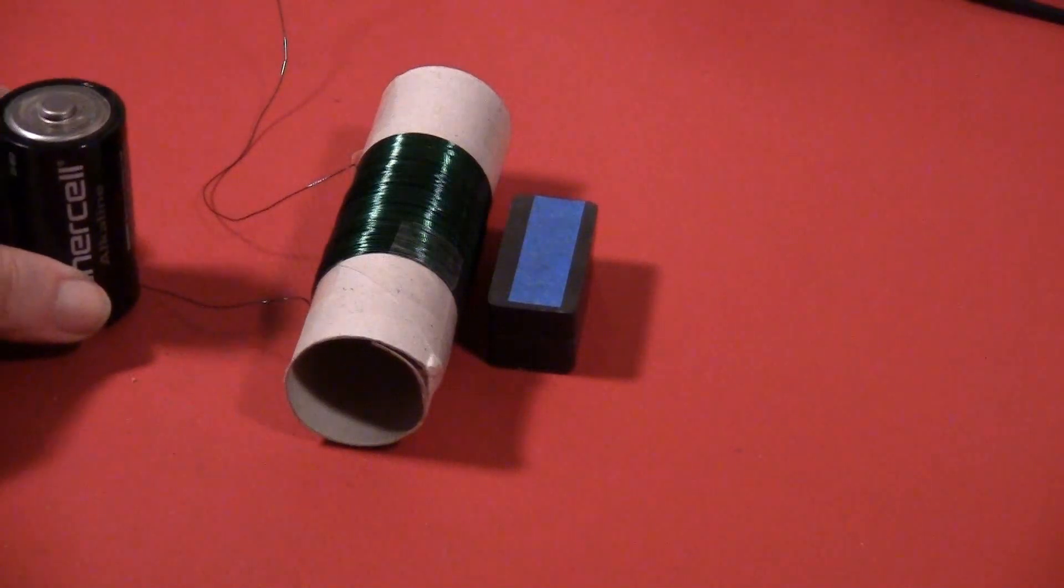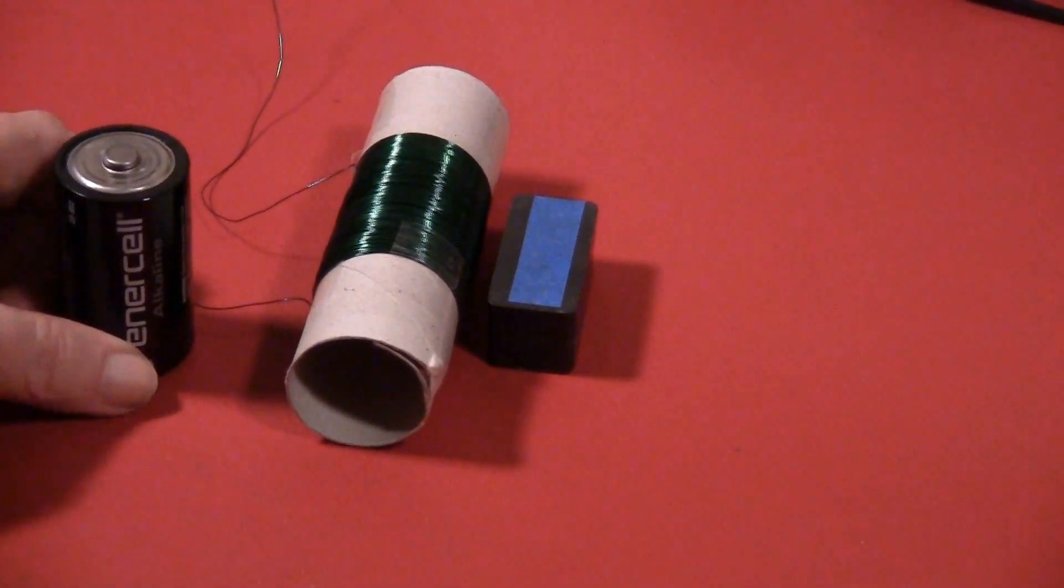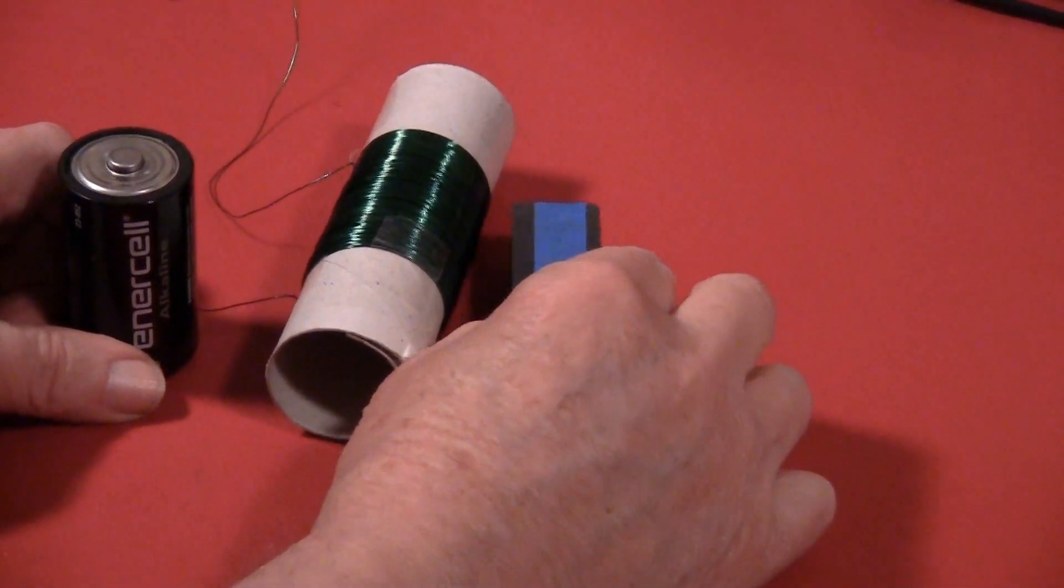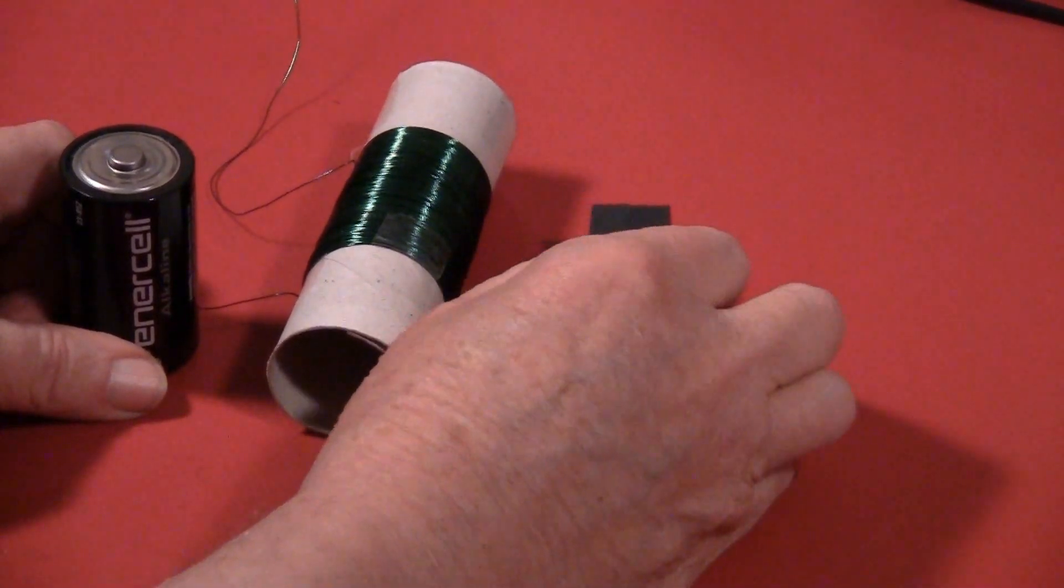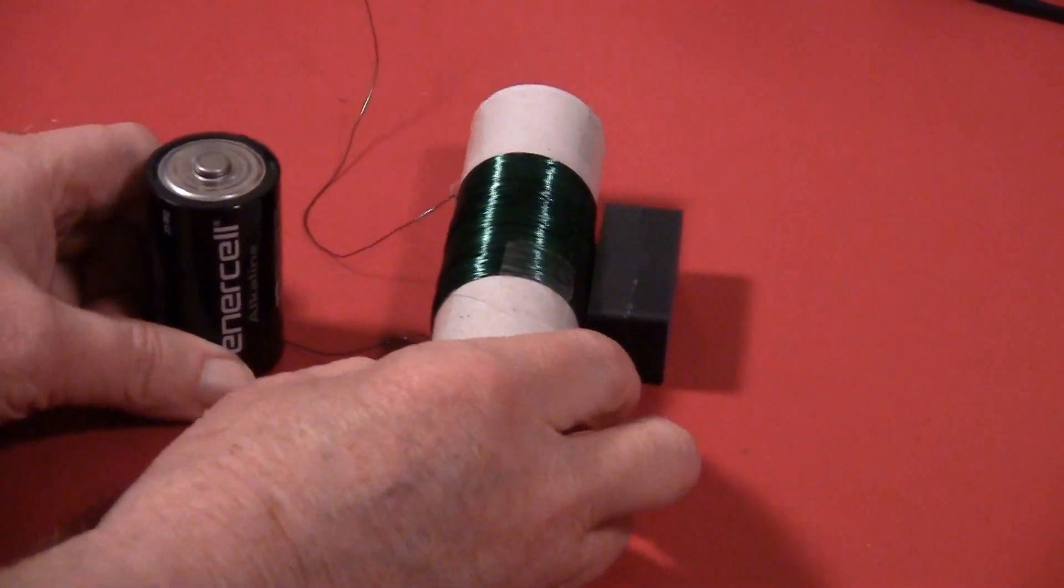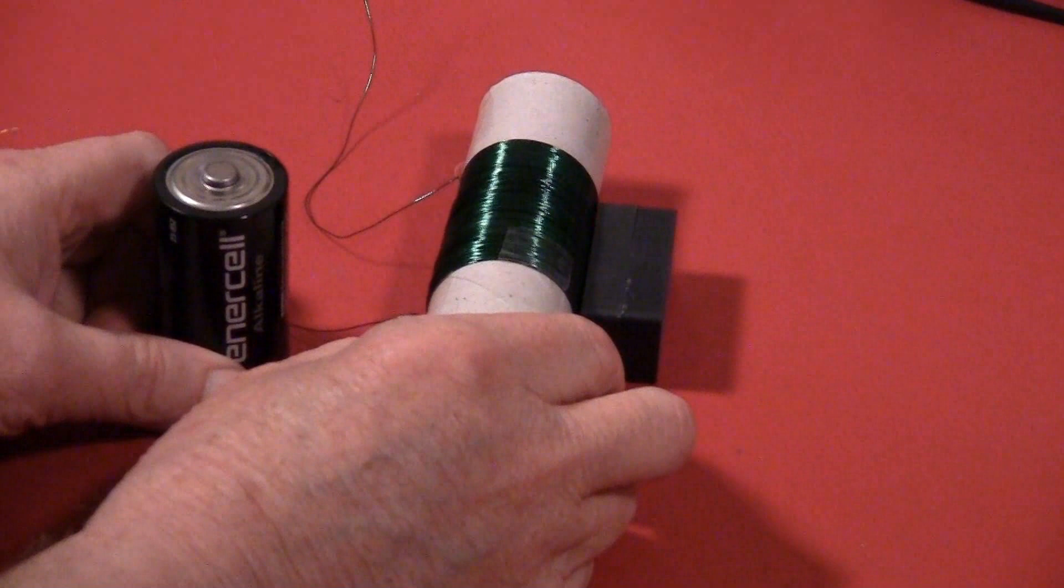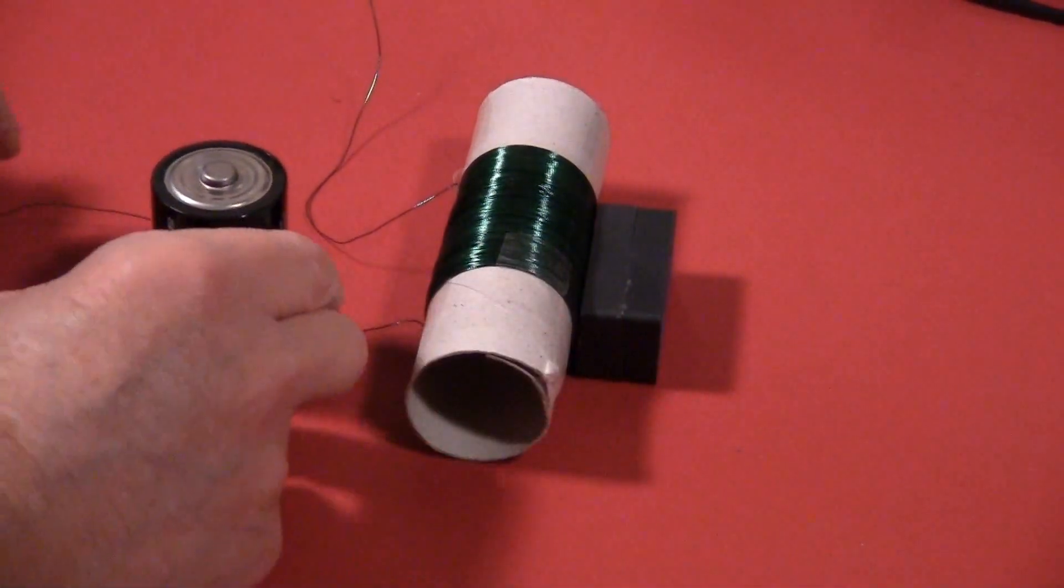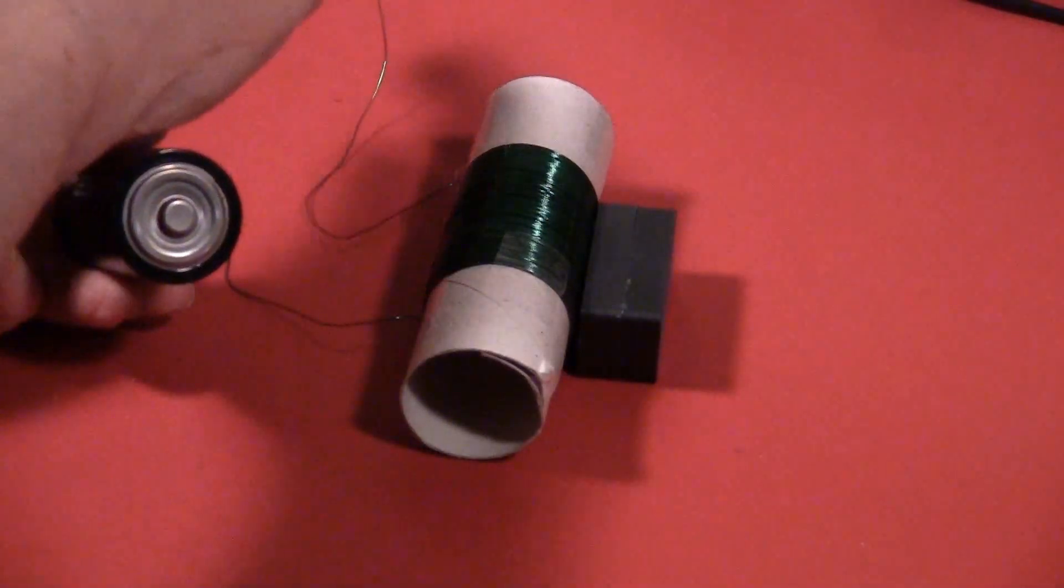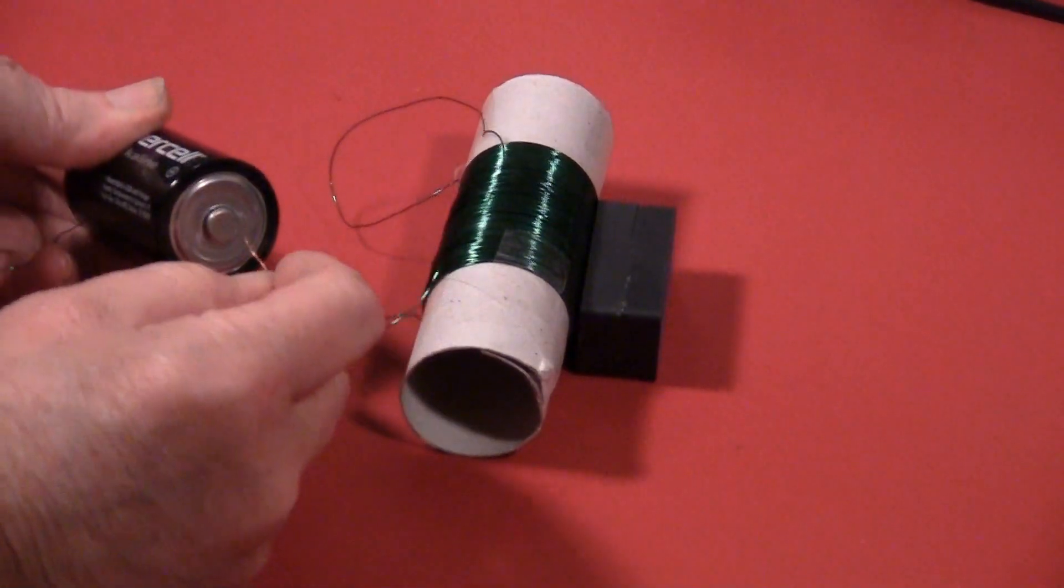Okay, now we have a battery, our coil, and our magnet. I'm going to set the magnet up against the coil like this, and we're going to hook up the battery to this coil.